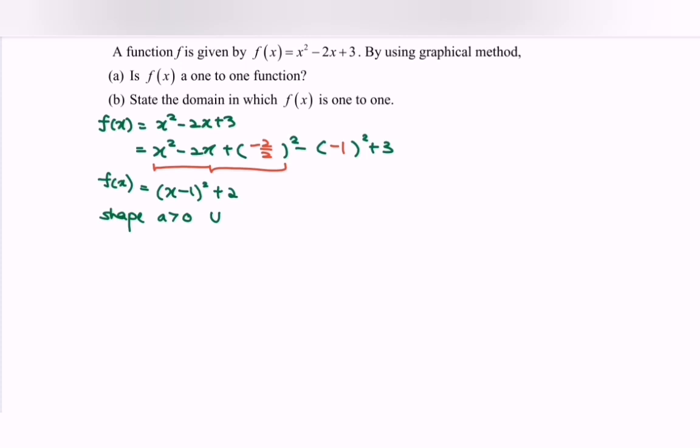Next, we have to find the intercepts. We have x-intercept and y-intercept. When y = 0, let's substitute: x² - 2x + 3 = 0.